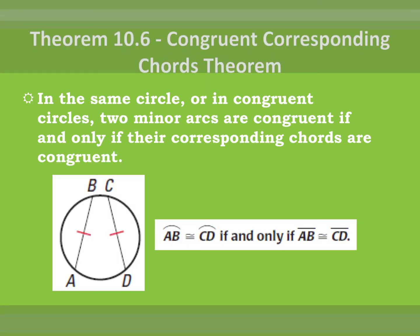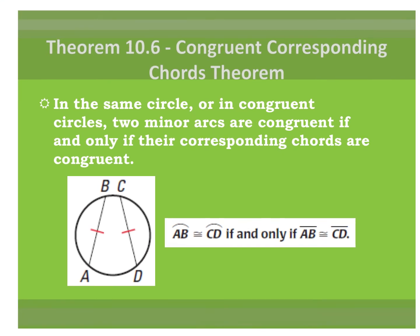The first one is a theorem — Theorem 10.6. You shouldn't be memorizing numbers. If it has a name, it makes it nice and easy. This one is called the Congruent Corresponding Chords Theorem. It states that in the same circle, or in congruent circles, two minor arcs are congruent if and only if their corresponding chords are congruent.